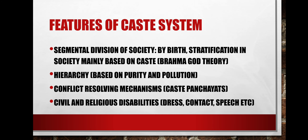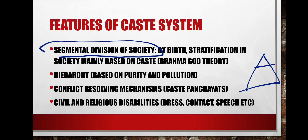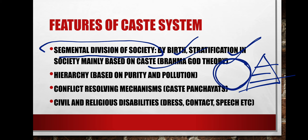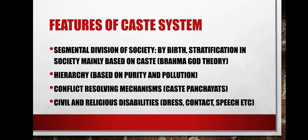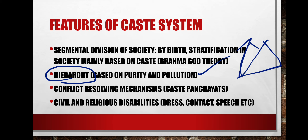There are several features of the caste system. The first is the segmental division of society — society is divided into segments based on birth and stratification. According to the Brahma God theory, the head represents Brahmins, shoulders represent Kshatriyas, hands represent Vaishyas, and legs represent Shudras. The second feature is hierarchy — a top-to-bottom arrangement where Brahmins are given the highest priority.